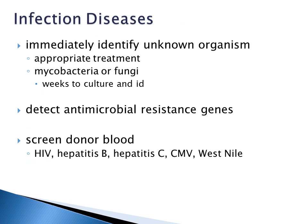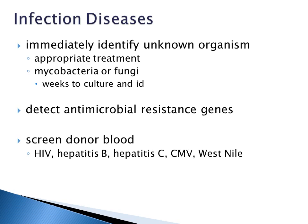Arrays can be used for infectious diseases to identify an unknown organism or find an appropriate treatment. Molecular techniques are especially useful for slow-growing organisms like mycobacteria or fungi — instead of waiting three to four weeks for growth, you detect nucleic acids directly. You can look for antimicrobial resistance genes such as mecA for Staphylococcus aureus or VAN genes for vancomycin-resistant enterococcus, and screen donor blood rapidly for HIV, Hepatitis B, Hepatitis C, cytomegalovirus, and West Nile virus.